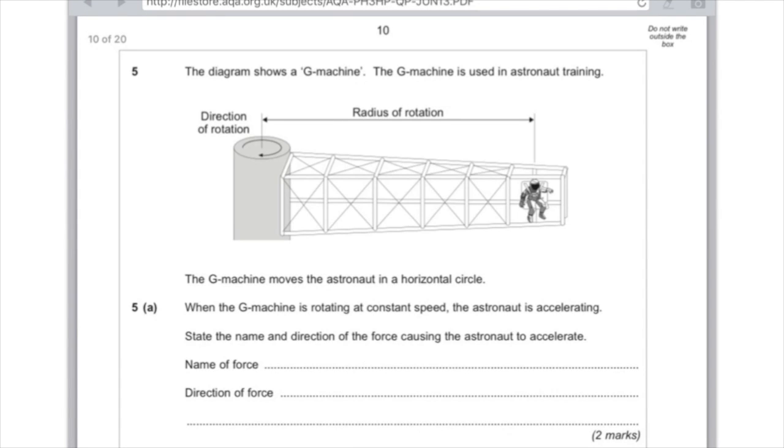The diagram shows a G machine. The G machine is used in astronaut training. The G machine moves the astronaut in a horizontal circle. When the G machine is rotating at constant speed, the astronaut is accelerating. State the name and direction of the force causing the astronaut to accelerate. Hopefully you've learnt this from your lessons, and the name of this force is always centripetal force. Basically, as soon as we know that he's moving in a circle, it should be screaming centripetal at you.